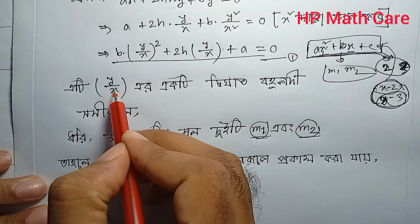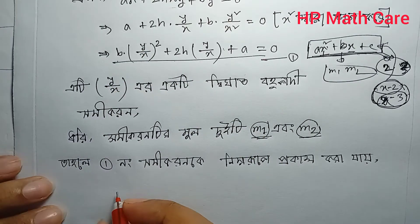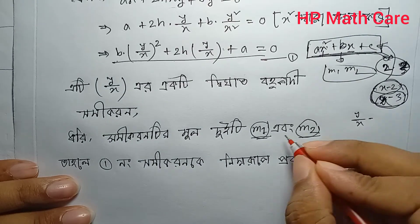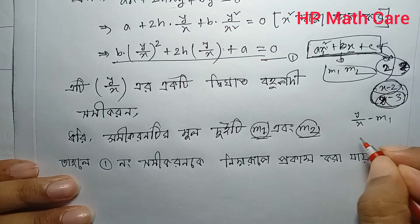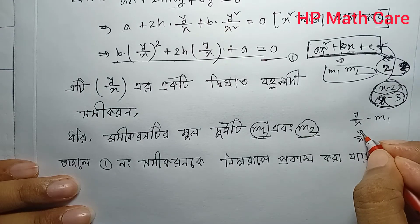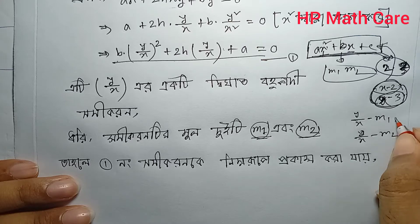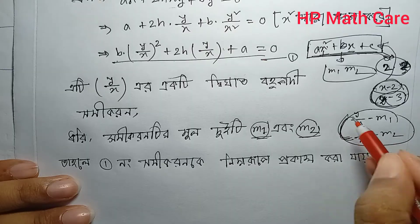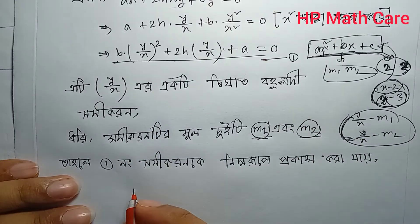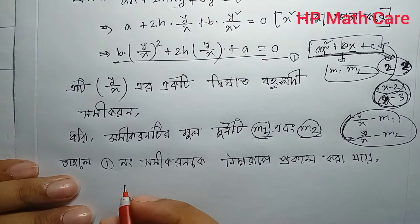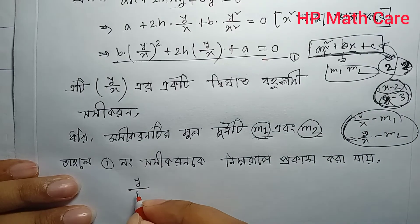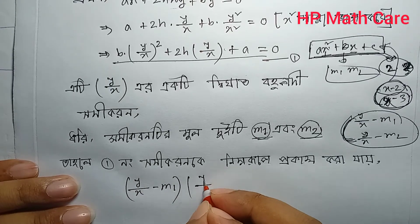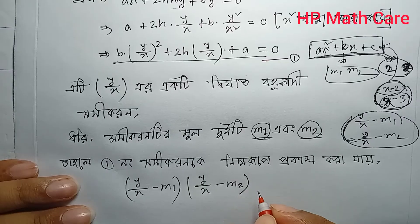So using y/x, let me show: we can write the equation as (y/x − m1)(y/x − m2). The product gives us: y/x minus m1, times y/x minus m2, because this equals zero for the two lines with slopes m1 and m2.